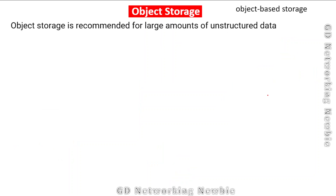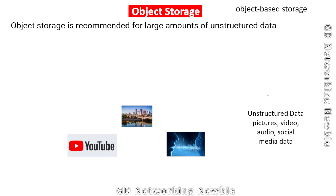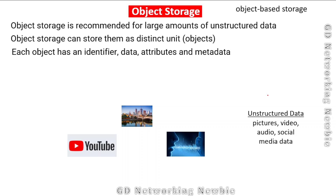The third storage format is object storage, which is recommended for large amounts of unstructured data. Examples of unstructured data are pictures, videos, audios, websites, and social media data. In object storage, all files or data are stored as distinct units called objects. Each object has certain elements: an identifier, the data itself, attributes, and metadata.